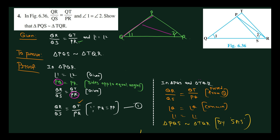In an isosceles triangle, two angles are equal, so the sides opposite to equal angles are also equal. Angle 1 is opposite to side PR. Angle 2 is opposite to side PQ, so PQ equals PR. Therefore, QR by QS equals QT by PR.